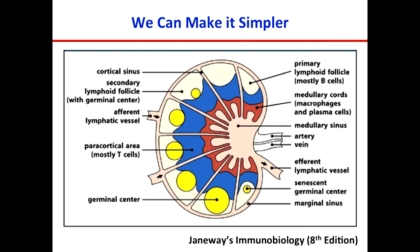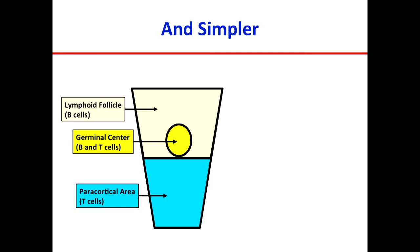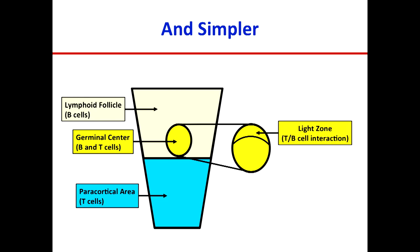I'm going to take this section and flip it on its side to show pericortical T cell areas in blue, the lymphoid follicle mostly B cells in cream, and then the germinal centers where T cells and B cells interact. Germinal centers have a light zone where T cells and B cells actually interact, and a dark zone where B cells go to proliferate. B cells interact with T follicular helper cells, move to the dark zone, proliferate, and those that survive can circle back and interact with T follicular helper cells again.